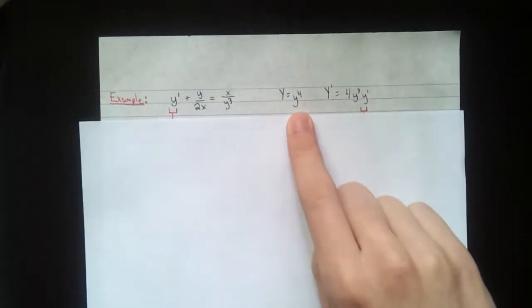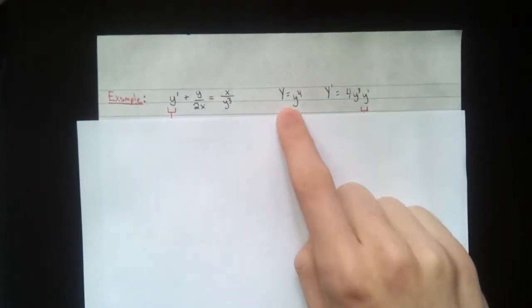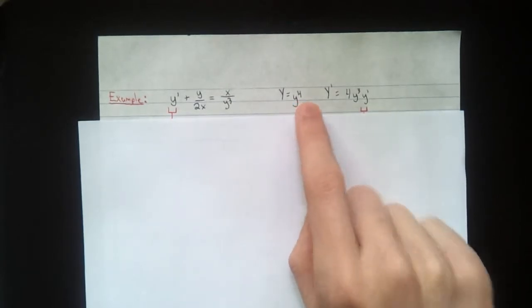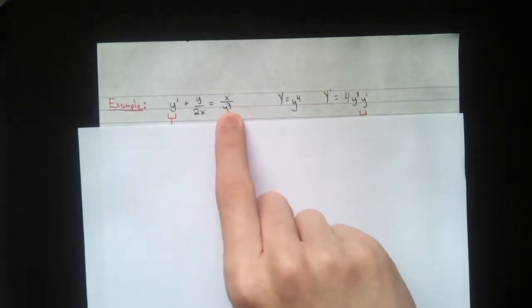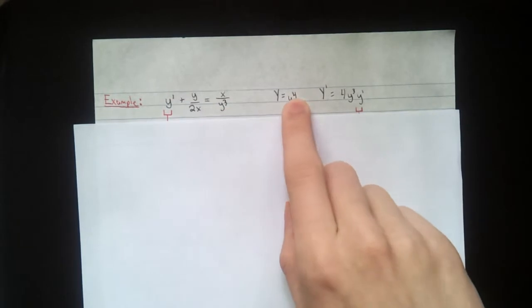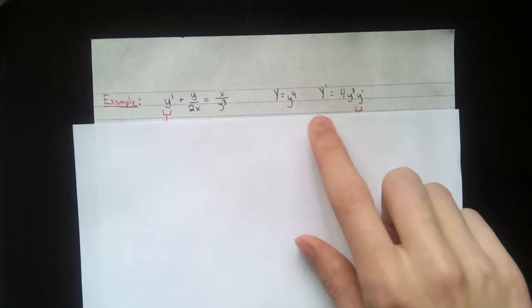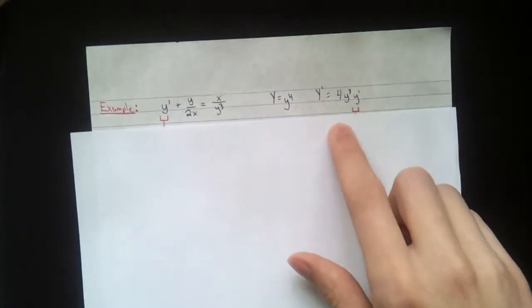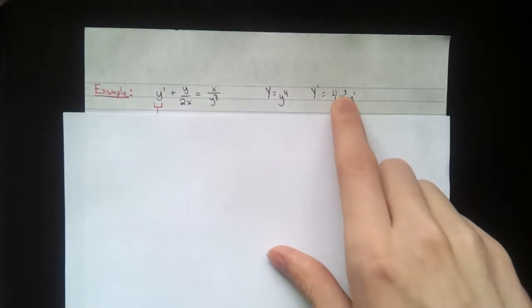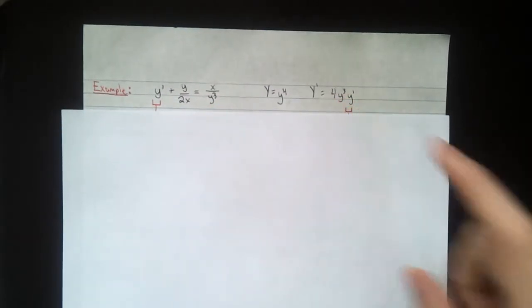And here we've just got our transformations here. So big y equals y to the 1 minus n. Here n is negative 3. So 1 minus negative 3, that's 4. And here we have 1 minus n is 4, times y to the negative n. n is negative 3 again, so that's positive 3 there, times y prime.